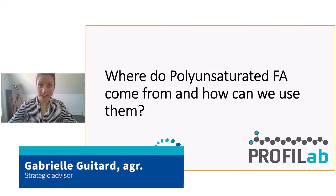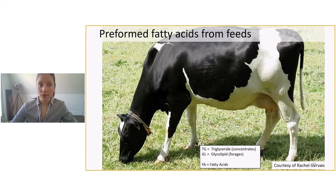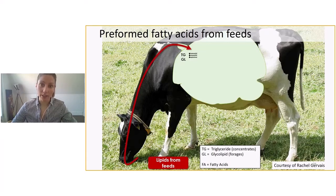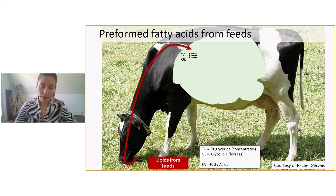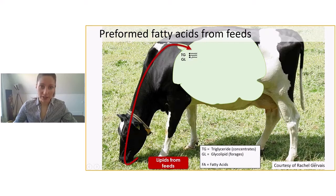Where do polyunsaturated fatty acids come from and how can we use them? When a cow is eating, she's ingesting feeds that contain lipids. These lipids can be in the form of a triglyceride, meaning that there is a glycerol represented at this vertical molecule here, and fatty acids that are attached to it.